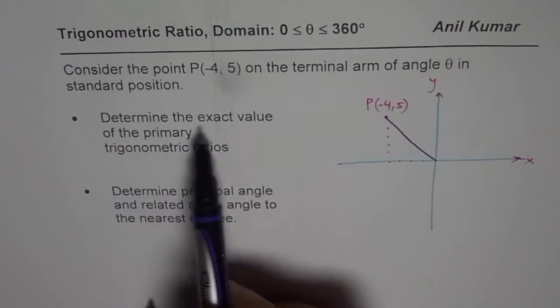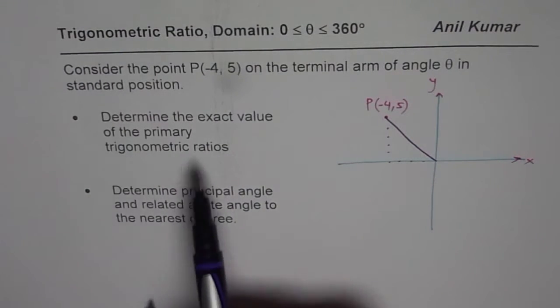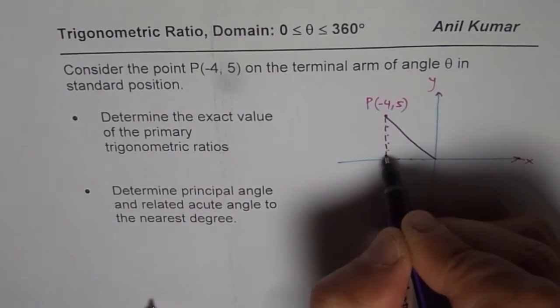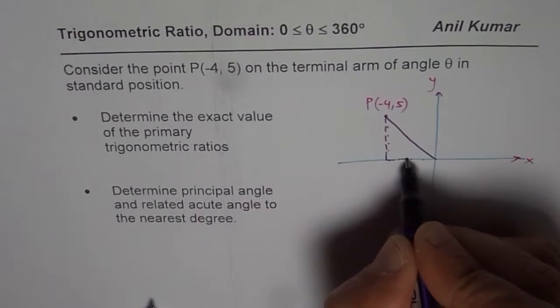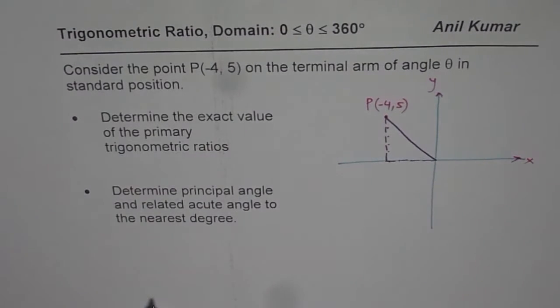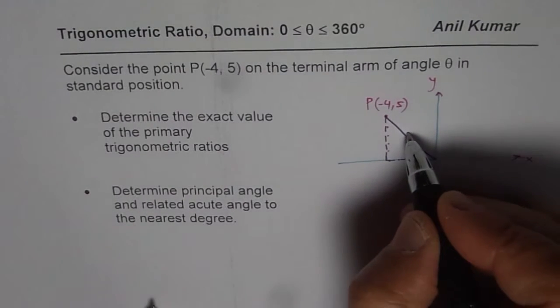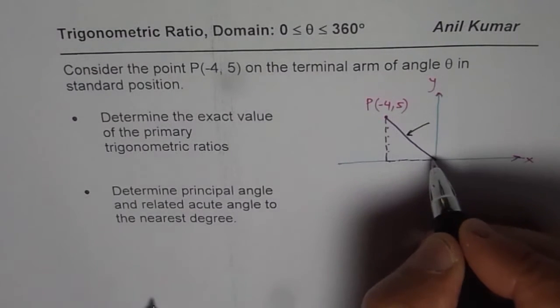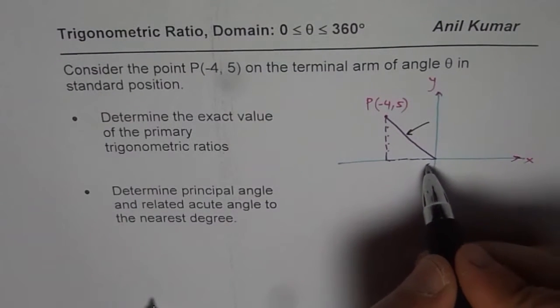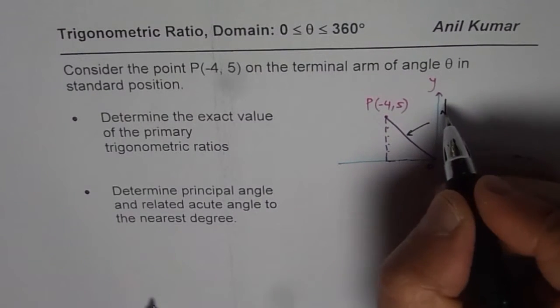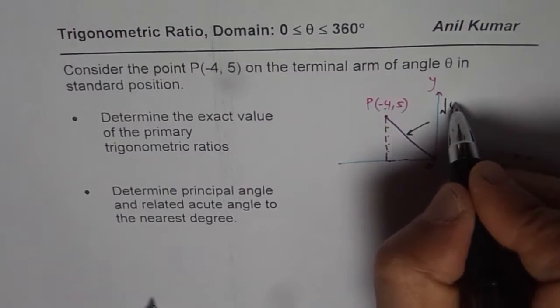In this quadrant, we are expecting sine to be positive and cos and tan to be negative, since we are in quadrant 2. Even before finding their exact values, first we need to find the hypotenuse. The arm length of the terminal arm, which is defined by the origin and the point P, can be calculated as square root of 4 square plus 5 square.